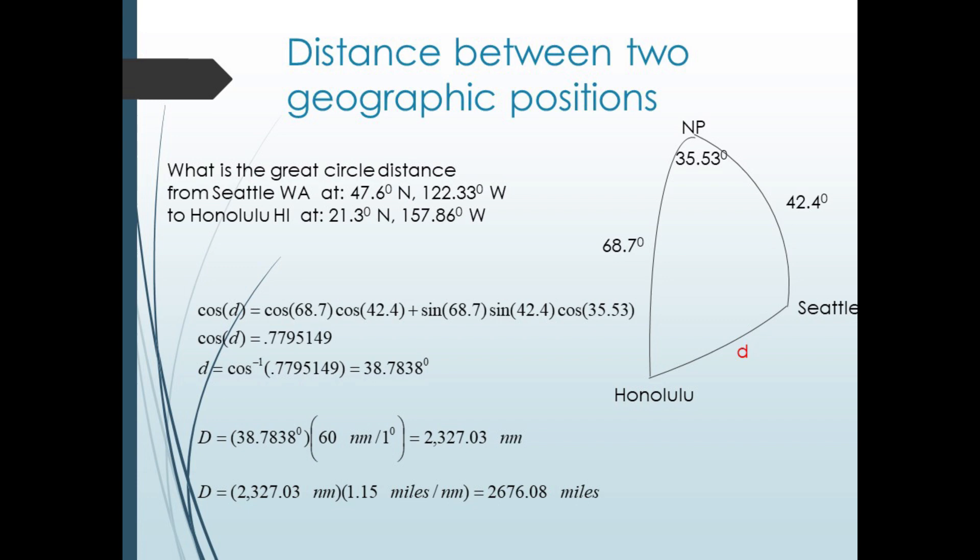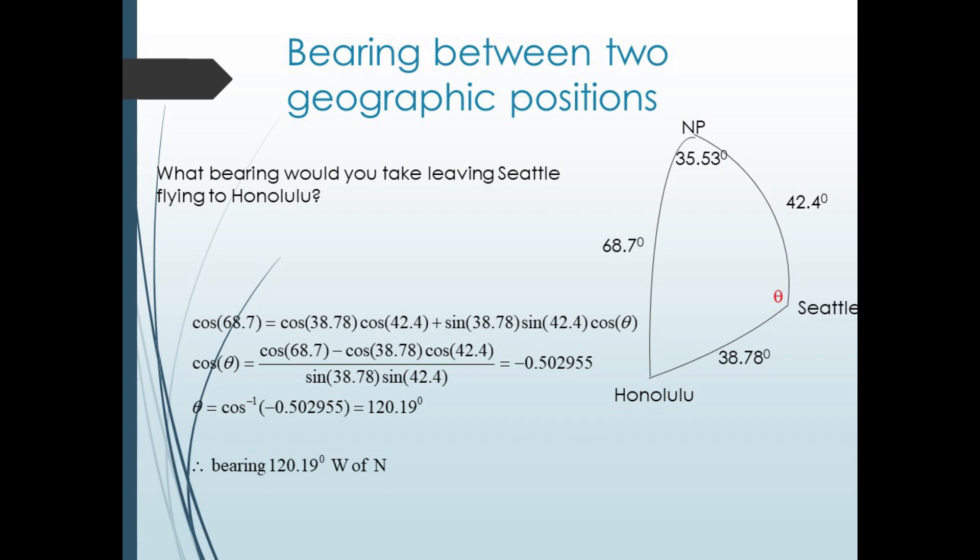Now we have all the information at the vertex in P. We can use our law of cosines to find side little d. We get cosine d equals cosine 42.4 cosine 68.7 plus sine 42.4 sine 68.7 cosine 35.53. So cosine of d equals 0.7795 and d equals 38.7838 degrees. Converting this arc measure to nautical miles, we get the distance from Seattle to Honolulu is 60 times 38.7838 equals 2,327.03 nautical miles. Notice that we now have all three sides for our spherical triangle, so we can also calculate the angle that is the initial bearing if we are departing from, say, Seattle. Using our law of cosines, again, we get cosine of theta equals negative 0.502955. So theta equals 120.19 degrees west of north. We could have also used our spherical law of sines, but we would have to be careful since our angle is clearly more than 90 degrees. We would have gotten a reference angle.